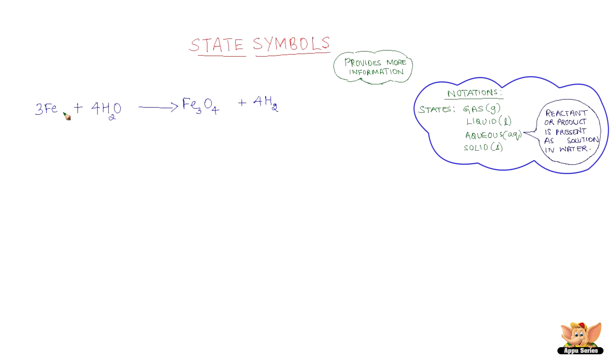Here iron is solid so we write S within parenthesis beside iron. Water reacting with iron is actually moisture so we represent it as G within parenthesis.